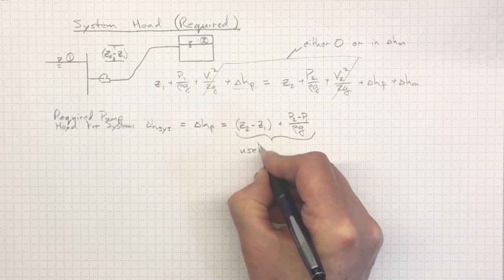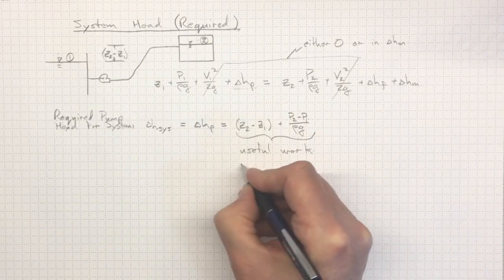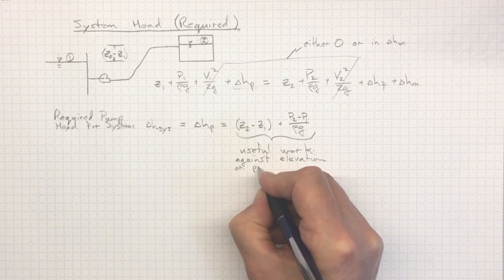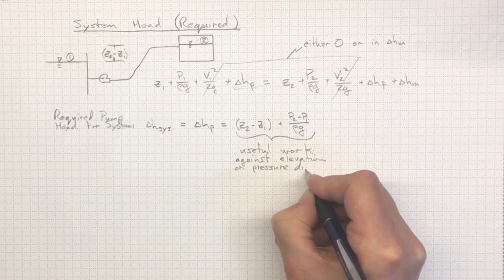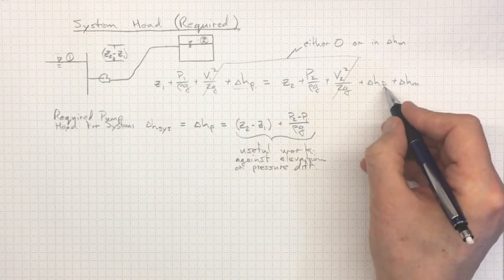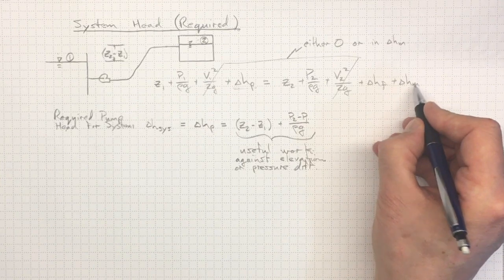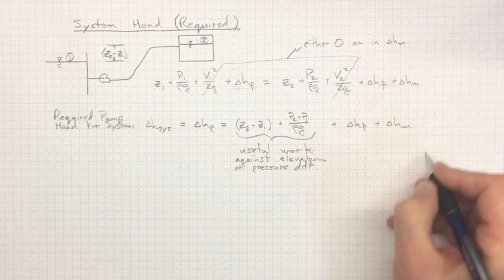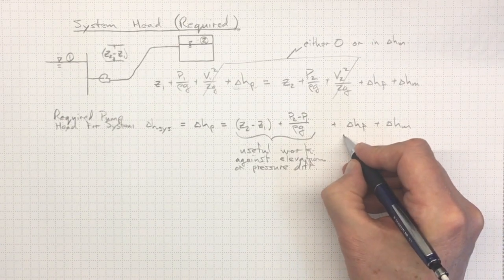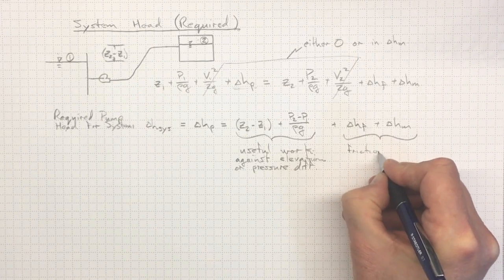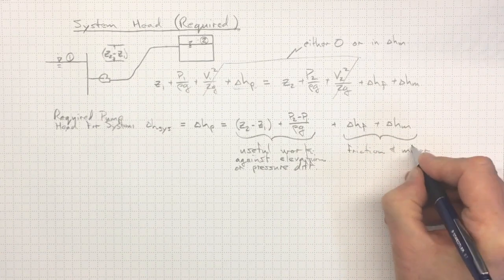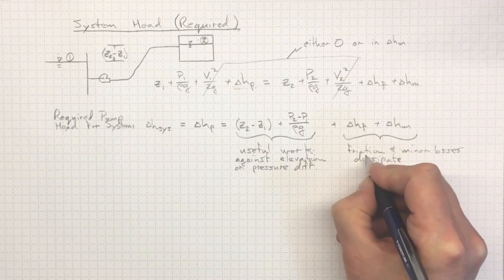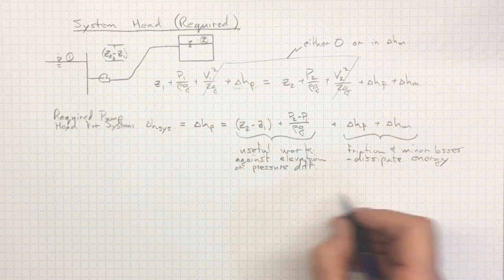Now, those together represent useful work against either elevation or pressure differences. In addition, we've got the loss terms over here. We've got head loss due to friction and minor losses. Now, those represent friction or minor losses, and they dissipate energy.